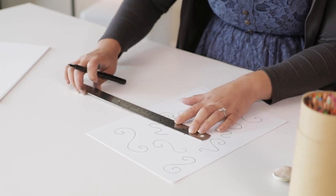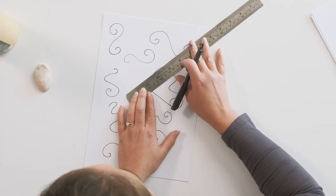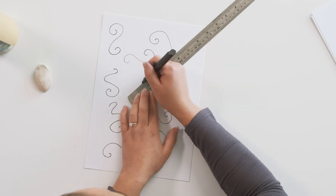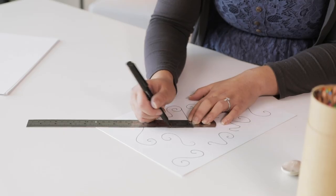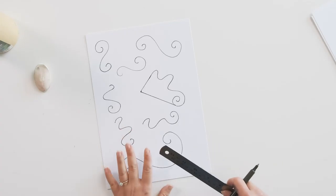Then I'm going to move my ruler around until I find the very end of my shape. You can see that my ruler is just hitting the tip here, so I'm going to draw another line. And then that will turn my swirl into a solid shape.